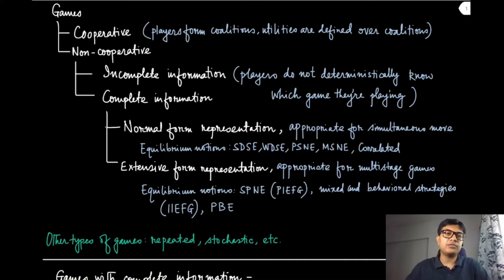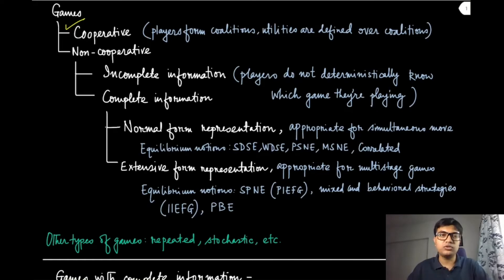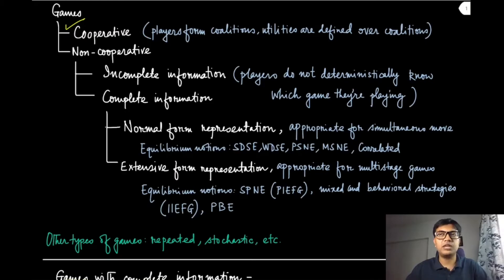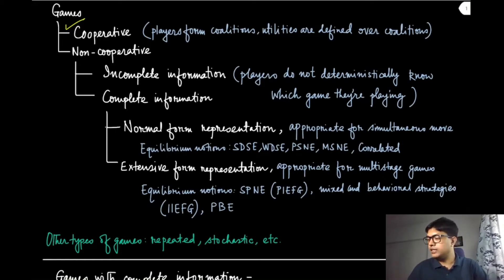Games broadly can be divided into two types: non-cooperative games and cooperative games. We haven't discussed anything about cooperative games and we will not do that in this course. In cooperative games, utilities are defined not only on individual players but also on coalitions — a collection of individuals. Since multiple players can cooperate, the properties needed are slightly different. In this course we are going to focus only on non-cooperative games.